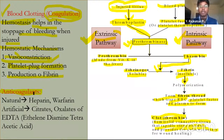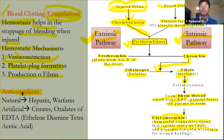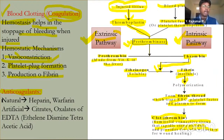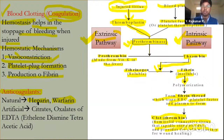Now let's look at anti-coagulants. Anti-coagulants are substances that prevent blood from clotting. Inside blood vessels, blood must remain in liquid form. The natural anti-coagulants produced by the body are heparin and warfarin.